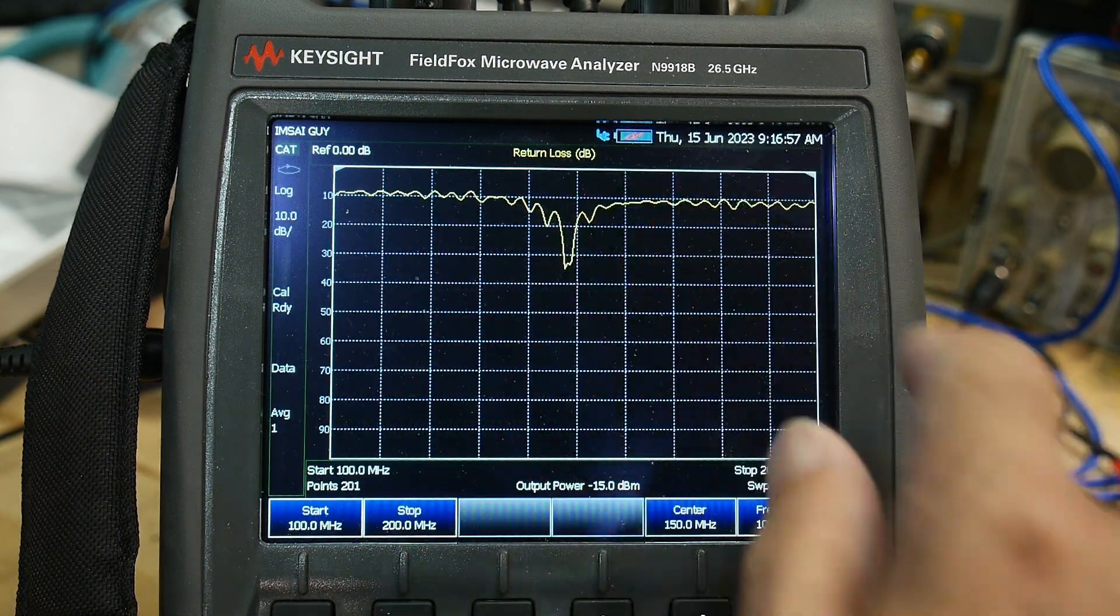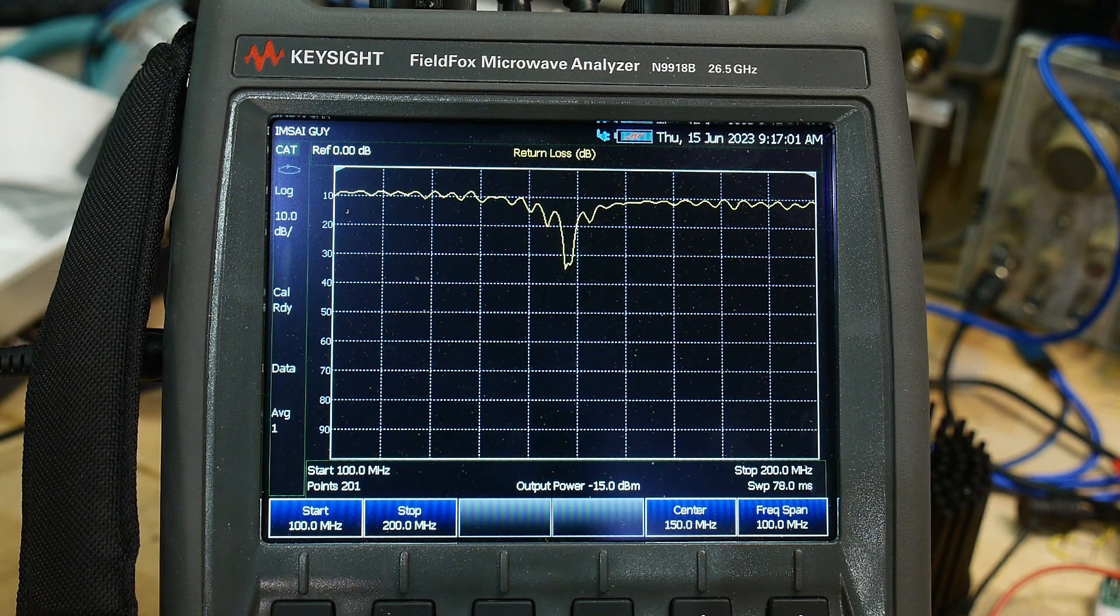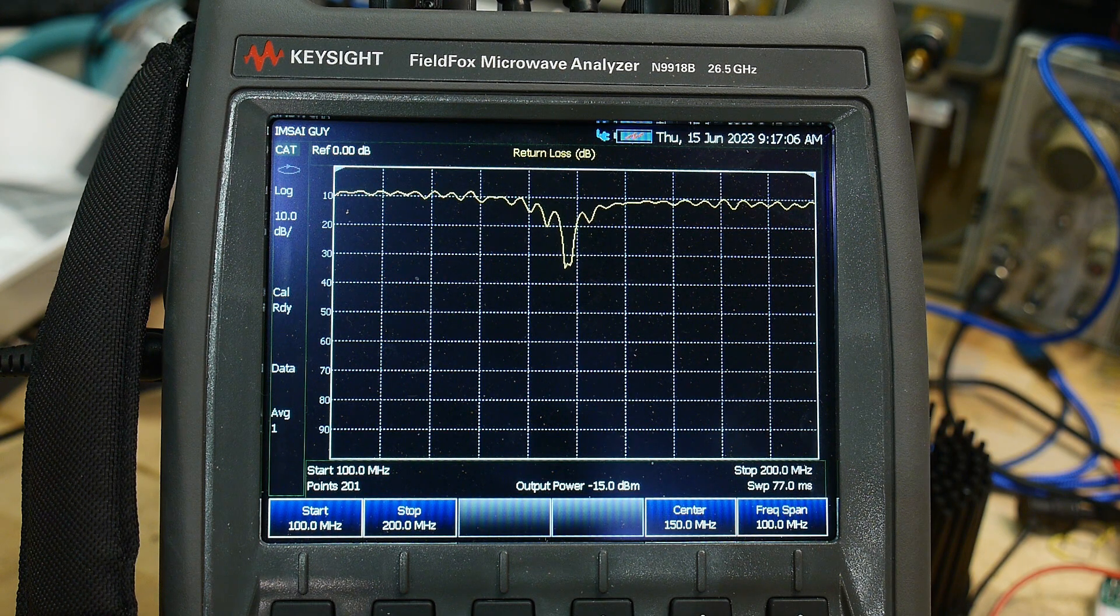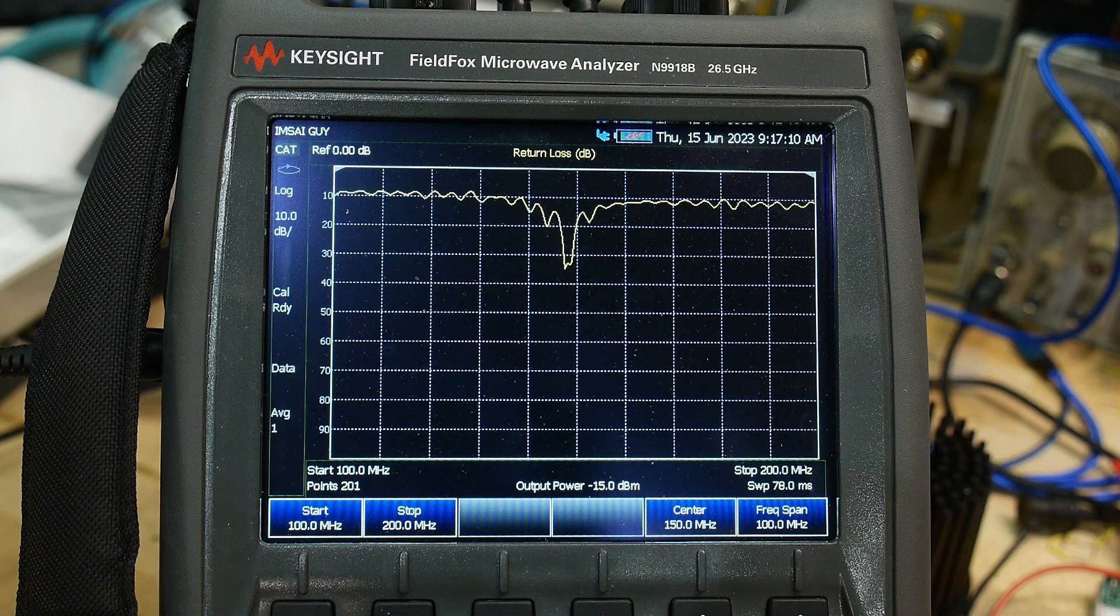And you can see we'll get this dip here right around the two-meter band, the 144 megahertz band. It's got a bunch of little wigglies on it and stuff, but that's due to reflections in the cable and stuff. We'll talk about that later. But this is what we're going to be interested in today.